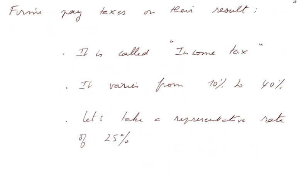Firms pay taxes on their result. They also pay VAT — value added tax — but this will be treated in another lesson. This tax on their result is called the income tax. It varies from 10% to 40% of the result before tax, or even less or more. It depends upon countries, upon periods, and upon the legislation specific to each industry. Let's take a representative rate of 25%.